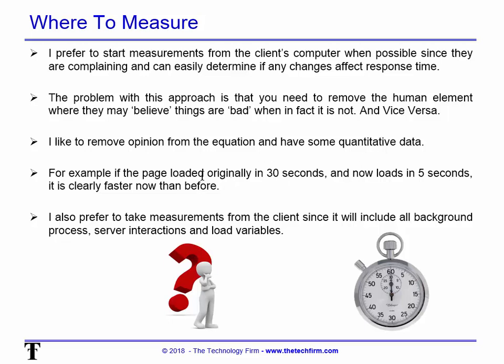For example, if the webpage loaded in 30 seconds, you make some changes and now it loads in five seconds — it's clearly faster. I also prefer to take measurements from the client since it will include all background processes on the actual computer. If the server has any interactions with other types of servers, that's going to cause delay. Load on the client, the server, and the network — all those variables get lumped into this one measurement, which makes things good to get a number but complicated if you need to strip away the different layers.